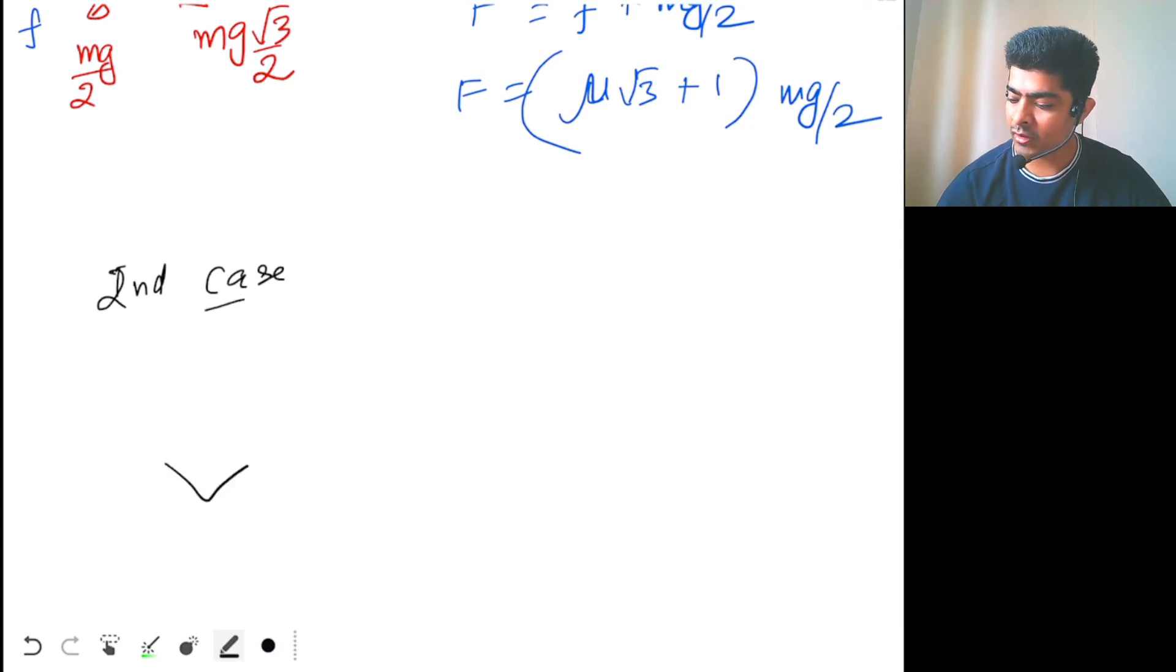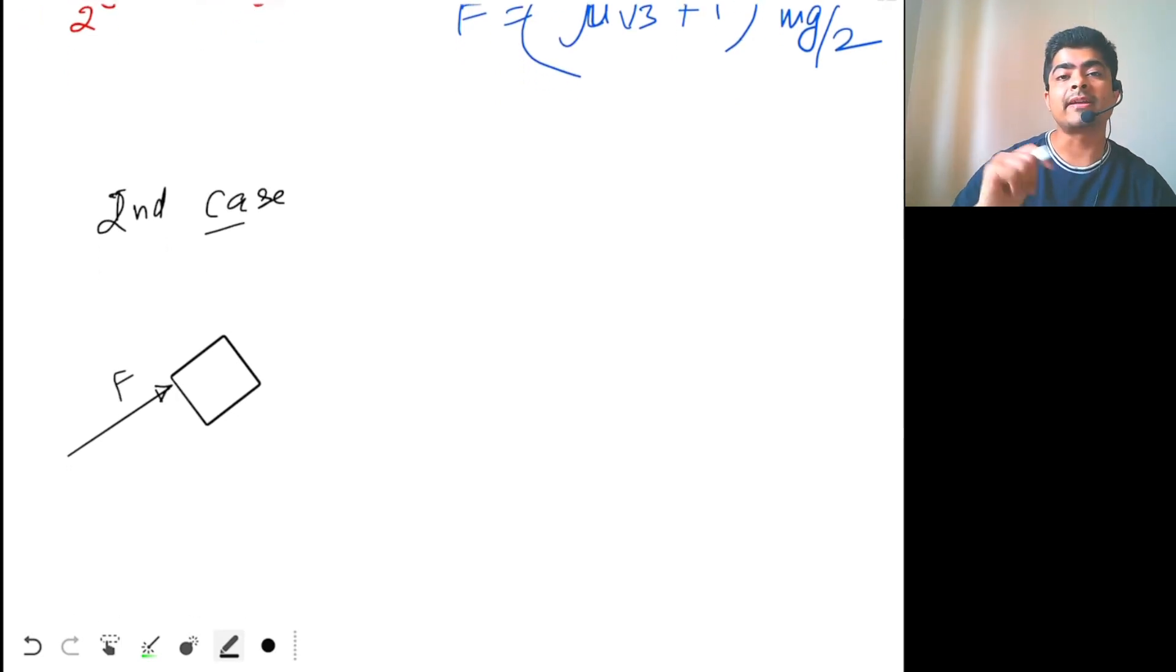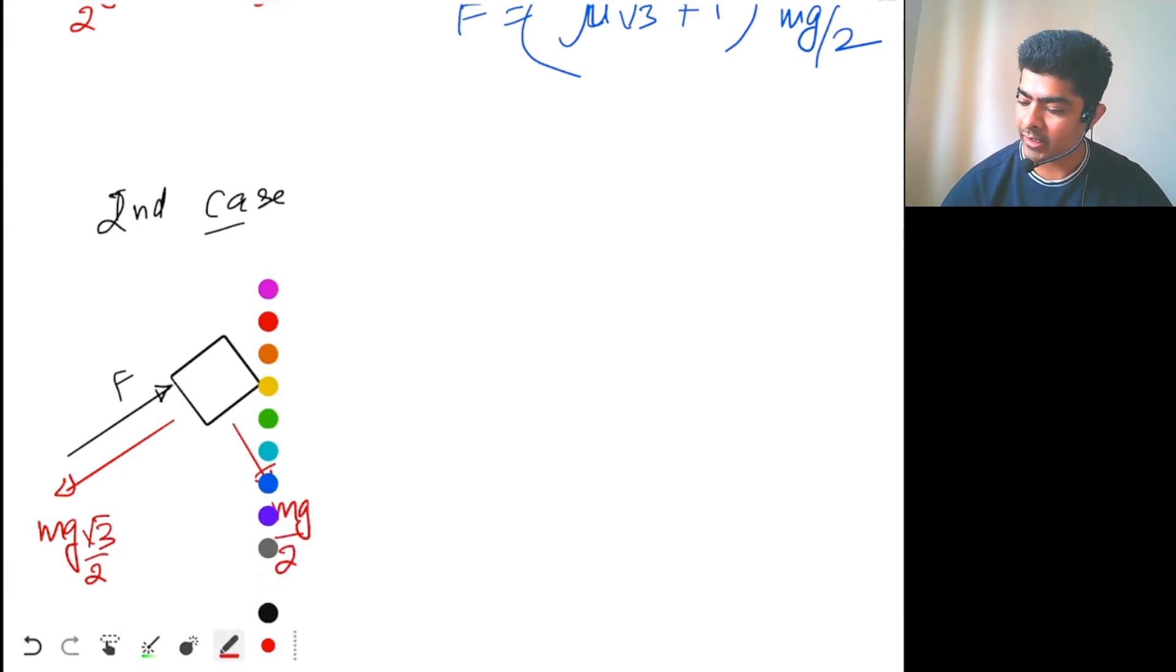so your block is over here, again you are applying a force F. Now, the angle is 60 degree. So the components of gravity will be what? This will be mg sin 60, so mg root 3 by 2. And here we have mg cos 60, so mg by 2.